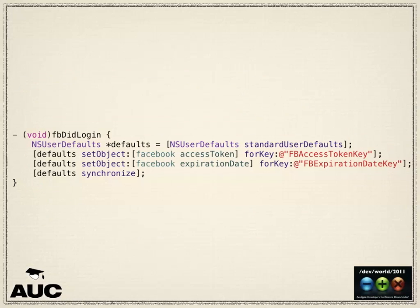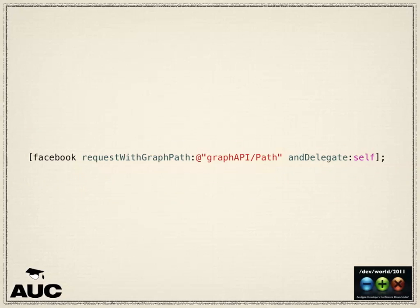After it's finished, it stores the defaults — if you've got a valid authorization, you keep that for later so when they launch your app again they don't have to authorize again. To make a Facebook Graph API call, you tell the Facebook object what graph you want, set the delegate to yourself, use the delegate callback which returns when it's finished. You download the SDK, drop the relevant files into your app, and you're done.